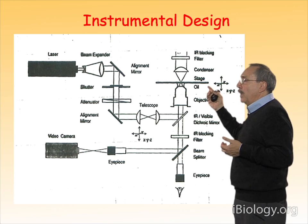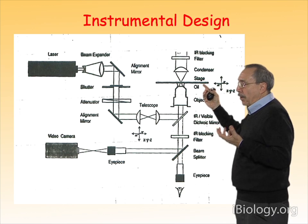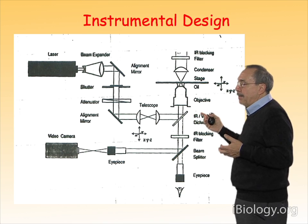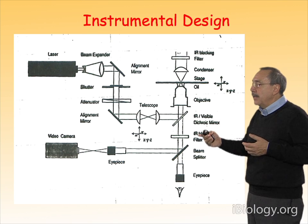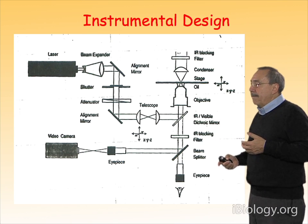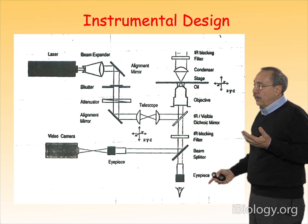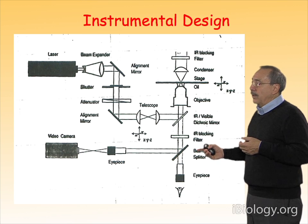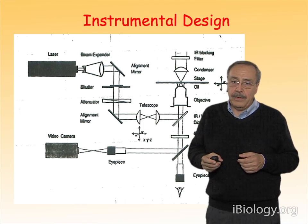That objective lens will collimate the light and form a diffraction-limited spot at that position, which is what is your trap. In addition to that optic for trapping, you want to have an eyepiece so that you have another source of light that allows you to see the object you are trapping through an ocular, through some kind of lens in your microscope, or you may want to project it into a video camera in order to record the trapping.